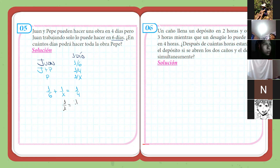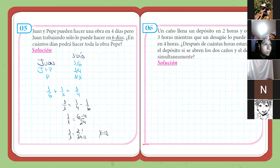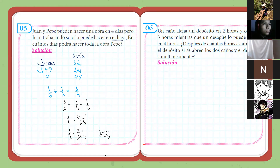Sería 1 sobre X igual a un cuarto menos un sexto. Al resolver esto, sería 6 menos 4 entre 24. Entonces, 1 sobre X será 2 entre 24. Tomo mitad y mitad, me queda un doceavo. Por lo tanto, X igual a 12. ¿Qué representa este 12? Los días que hace Pepe solo la obra. ¿Se entendió, chicos? Un par de fracciones sumar y listo. Pura lógica.